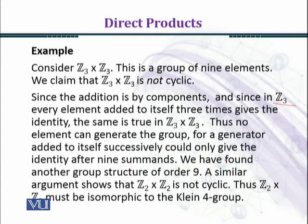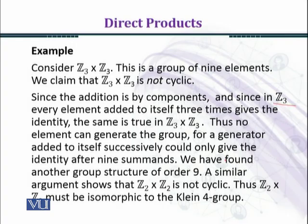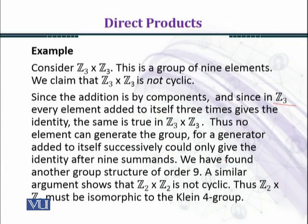A similar argument shows that Z₂ × Z₂ is also not cyclic. Z₂ × Z₂ has four elements: (0,0), (0,1), (1,0), (1,1). Every non-identity element has order 2 — for instance (1,0), (0,1), and (1,1) all have order 2, and the identity (0,0) has order 1. So this group is the Klein-4 group. We have seen that up to isomorphism there are two group structures of order 4: the cyclic group and the Klein-4 group. Z₂ × Z₂ is the Klein-4 group.